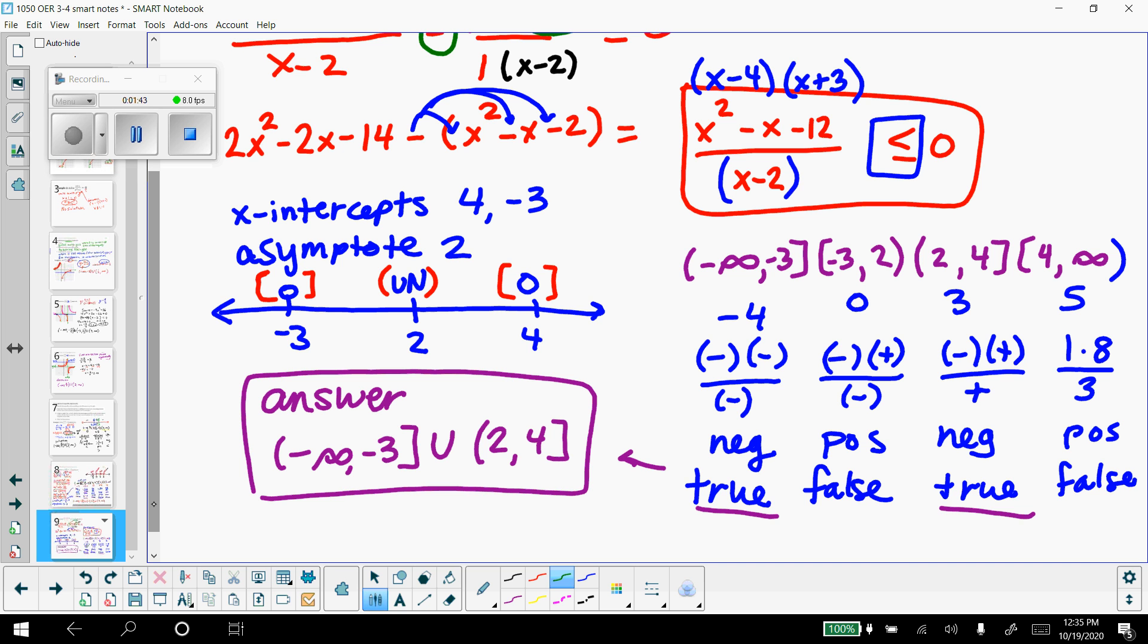I broke my three critical values into four intervals from negative infinity to negative 3, negative 3 to 2, 2 to 4, and 4 to infinity. You can see I've got that written out right here.